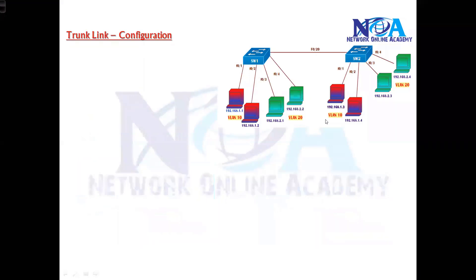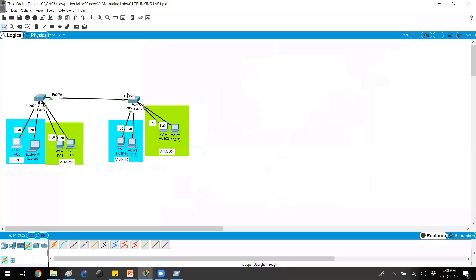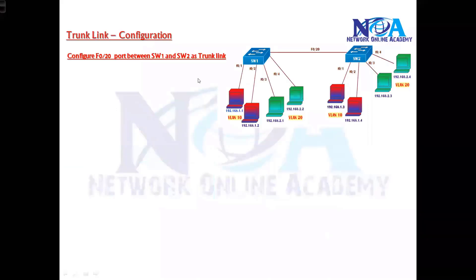To enable communication, we need to configure a trunk link. I am using port number 20 for the switch-to-switch connection, but you can use any port — 20, 21, 22, 23, 24, or any GigabitEthernet ports. Port number 20 connects the two switches and needs to be configured as a trunk link.